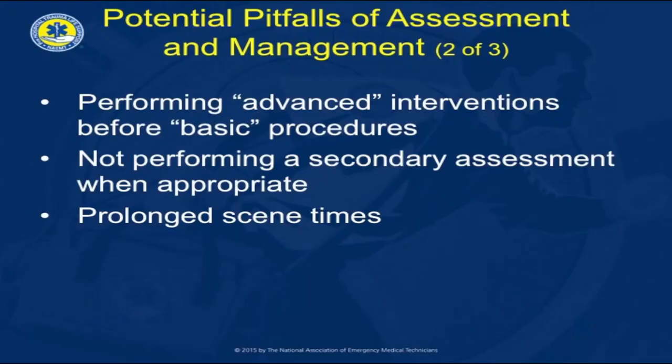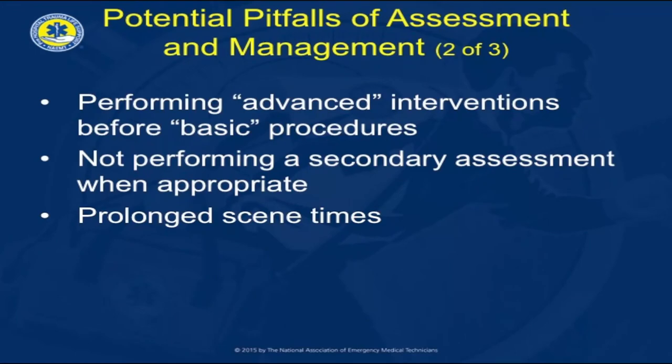Priority assessment focuses on the primary airway, breathing, circulation, disability, and exposure. The ABCDE always comes first and should be fixed first before we fix any of the secondary findings. Some other pitfalls include performing advanced interventions before basic procedures are done — intubation needs to be done, but nobody has a non-rebreather or bag valve mask being used on the patient; we're starting an IV but haven't controlled the hemorrhage. BLS before ALS. Not performing the secondary assessment when it's appropriate and you have the time — it is okay not to do the secondary assessment if you have a very short transport time, but if you have the time, it should be performed.